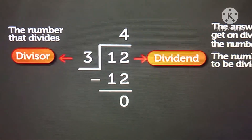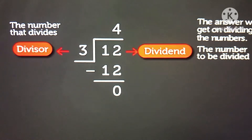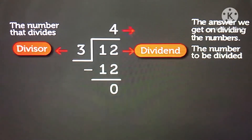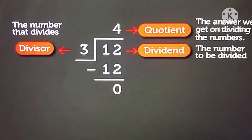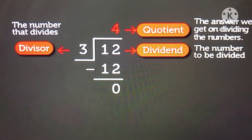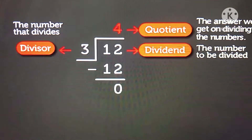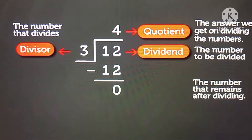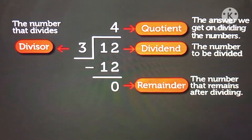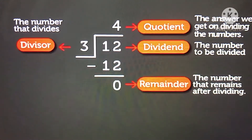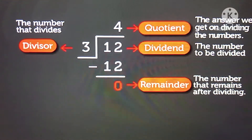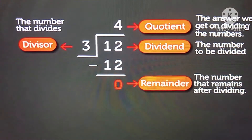The answer that we get on dividing the numbers is called the quotient. Here, the number 4 is the quotient. The number that remains after dividing is called the remainder. Here, the number 0 is the remainder.